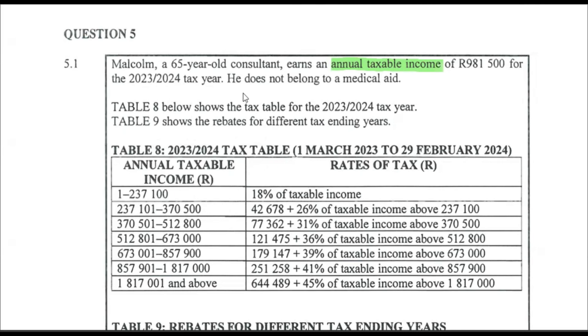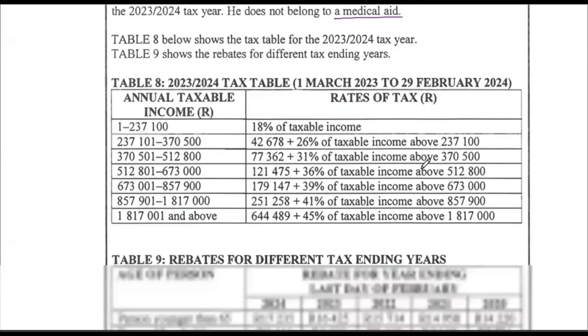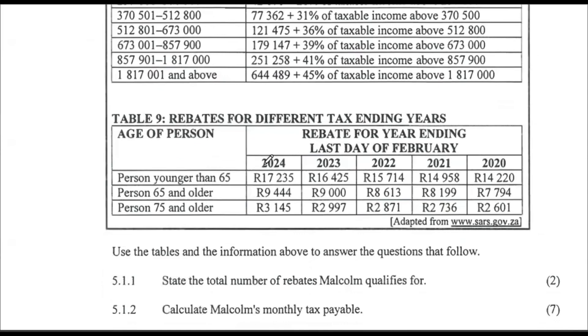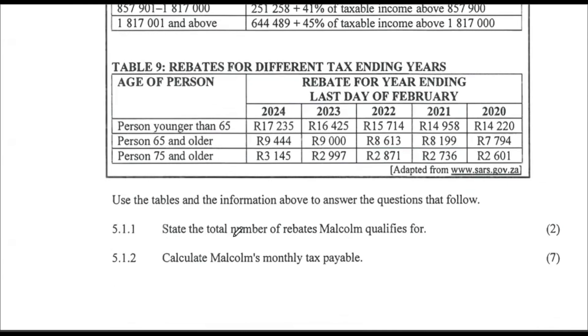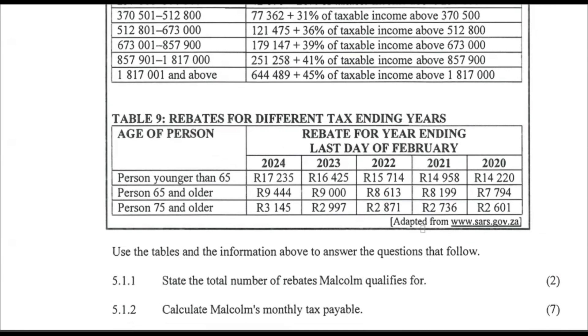The tax year. It's already taxable income, so we shall not consider medical tax credits. Table eight shows the tax table and rebates for 2023. State the total number of rebates Malcolm would qualify for. A person 65 years of age qualifies for primary and secondary rebates, so the answer is two rebates.